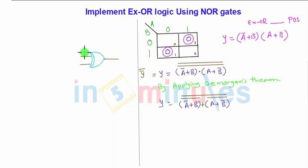These inputs for this first NOR gate are A bar plus B the whole complement, and this input is nothing but A plus B bar the whole complement. Now to get this input ready,